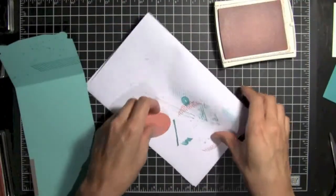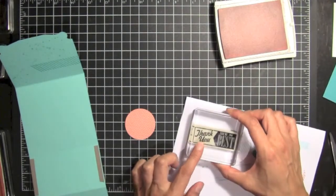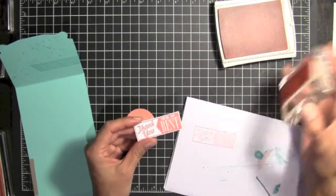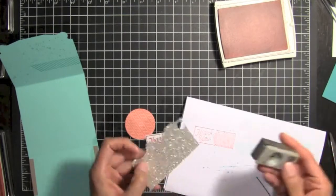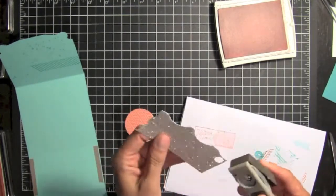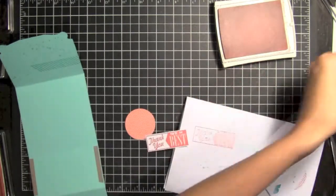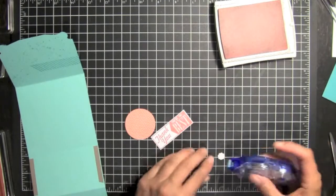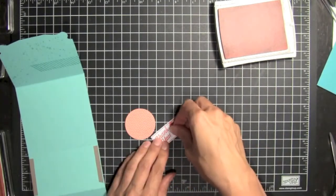And then I've stamped this Thank You, You're the Best stamp. And I've already cut it out here. And we are going to use some glimmer paper. And we're going to punch just a little scallop circle out of this from the itty-bitty punches.